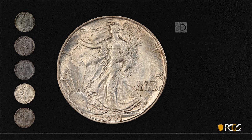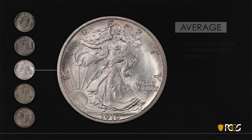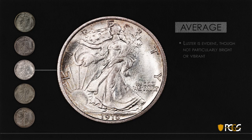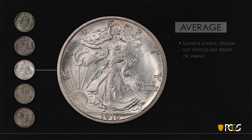In the middle we have a coin with just average luster — it's evident, though not particularly bright or vibrant. You're starting to see a few of the light and dark areas characteristic of frosty luster, but they're just not well-defined or pronounced. This is a coin where you just shrug your shoulders when considering the luster — it doesn't really hurt it and doesn't really help it.